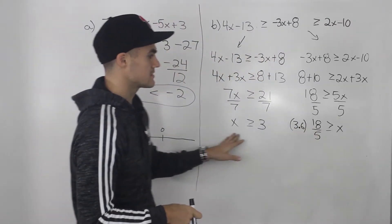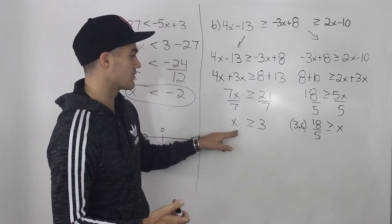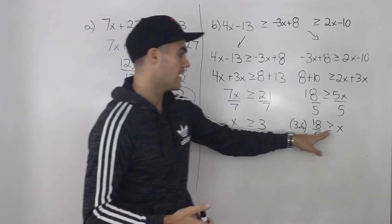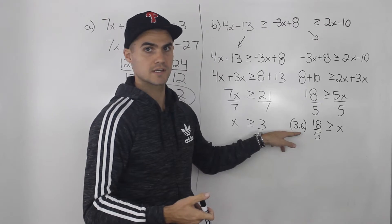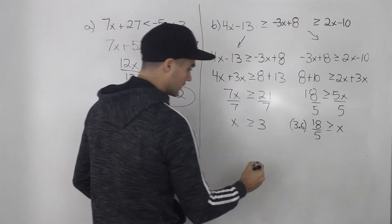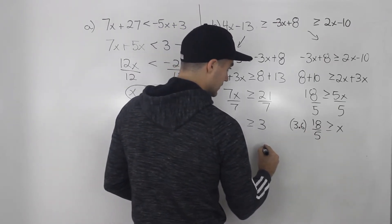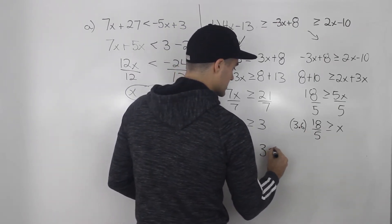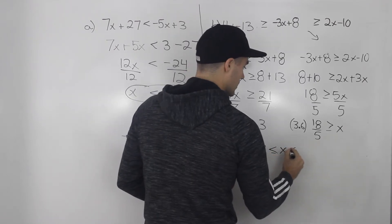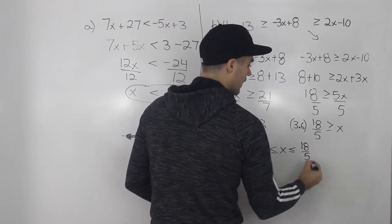So notice if we combine these, that is a possible solution. x has to be greater than or equal to 3, but less than or equal to 3.6. So there's a possible solution for this inequality. So if we combine both of these, basically, x has to be greater than or equal to 3, but less than or equal to 18 over 5.